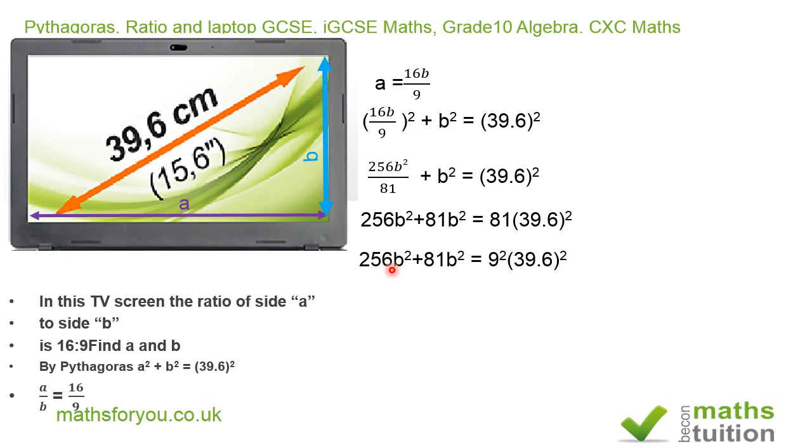So our next line becomes 256b² + 81b² = 9²(39.6)².